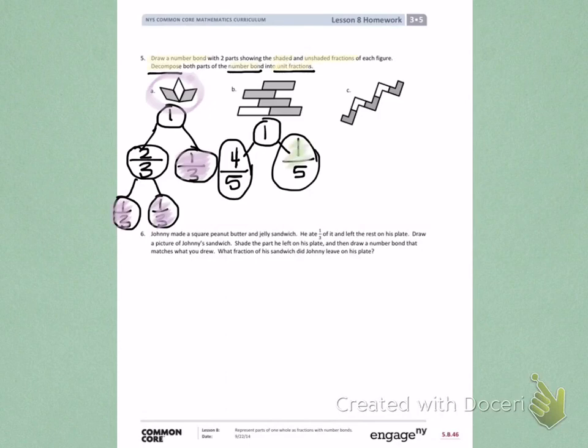One-fifth is already in unit form, because one is the numerator. Four-fifths needs to be decomposed into unit form, and it's going to take four portions to create four-fifths.